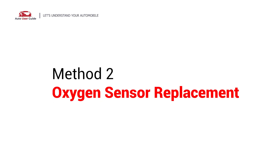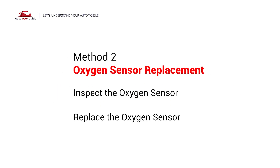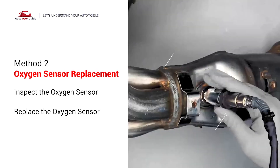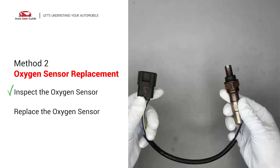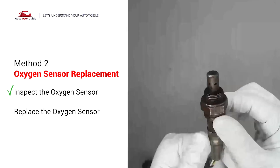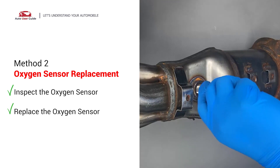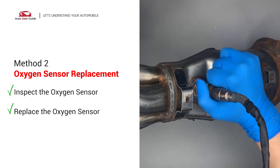Oxygen sensor replacement: carefully remove the oxygen sensor from the catalytic converter and visually check the oxygen sensor's electrical connections, wire harness, and metal tabs for any damage. If damage is found, replace the oxygen sensor.